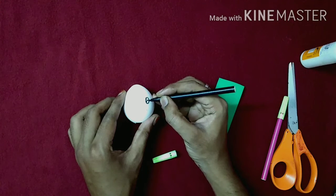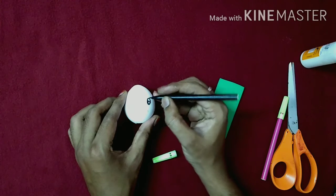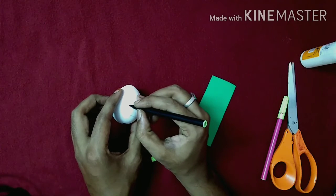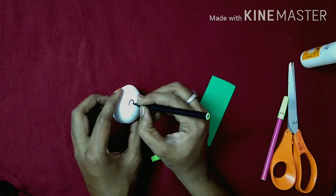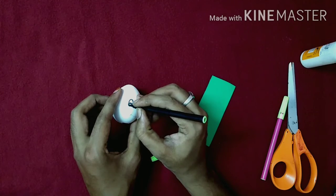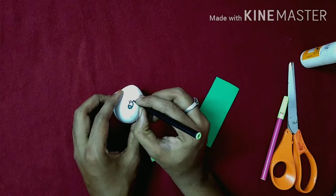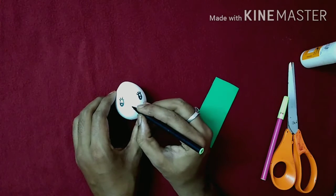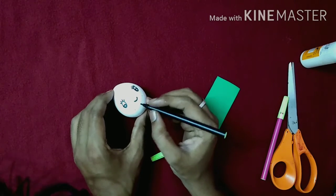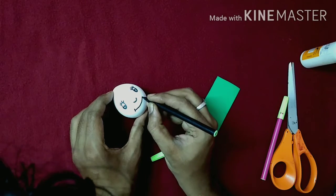Draw one circle, and then one more circle inside. After that, draw eye lines, nose, and smile.